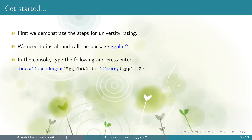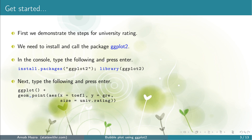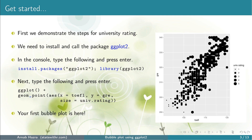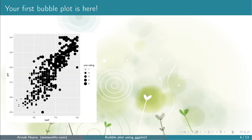Now we are ready to create the ggplot. In the console window, type: ggplot() + geom_point() with aesthetics x equals TOEFL, y equals GRE, and size equals UNIV.RATING. Press enter. You get your first bubble plot. We can see that the axis titles are just the names of the vectors.